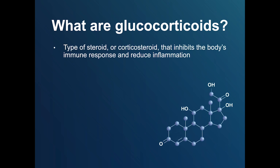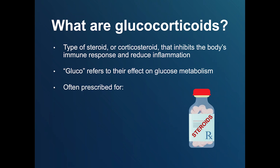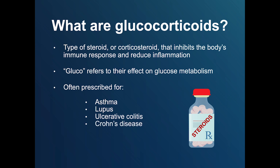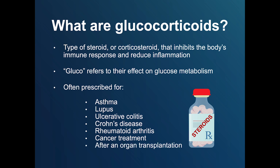Glucocorticoid medications are a type of steroid, specifically a corticosteroid that inhibits the body's immune response and reduces inflammation. The name glucocorticoid is partially derived from the effect of these steroids on glucose metabolism. Glucocorticoids are widely prescribed to treat conditions such as asthma, lupus, ulcerative colitis, Crohn's disease, and rheumatoid arthritis. They are also prescribed as part of cancer treatment or given to patients after organ transplantation in order to prevent rejection of the donated organ.